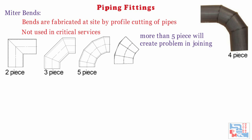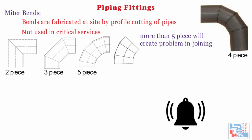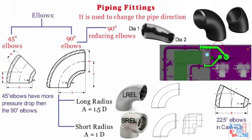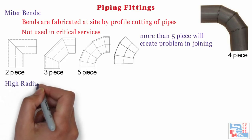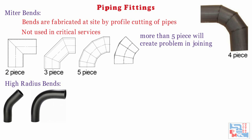You will soon see a video on how to calculate miter angle for pipe pieces — please stay tuned and subscribe to our channel. Standard elbows have 1.5D or 1D bend radius. There are specially purchased bends with 3D or greater bend radius, such as 5D, 10D, and in some cases up to 15D bend radius.